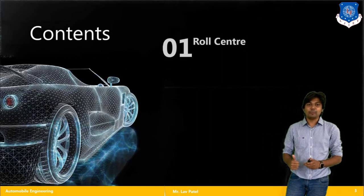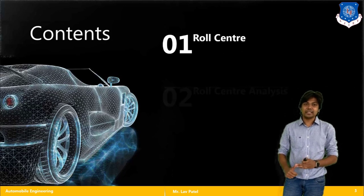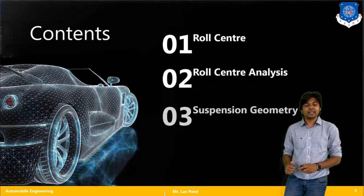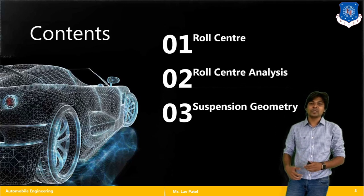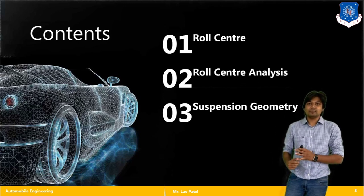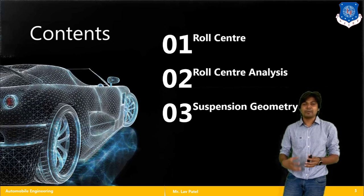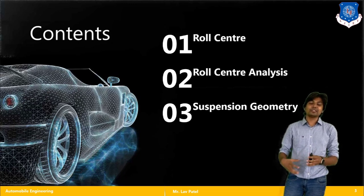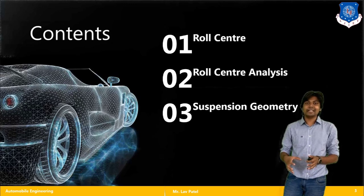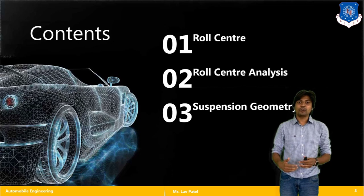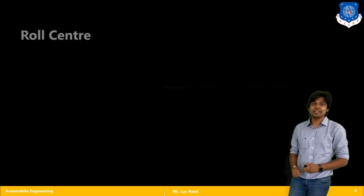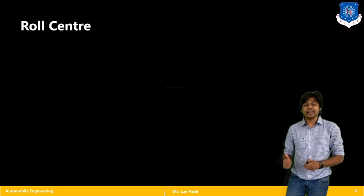In today's lecture we will talk about three main points: first is roll center, second is the roll center analysis, and third is the suspension geometry. We will discuss one by one what roll center means, how roll center affects the overall stability of the vehicle, and how to choose suspension dimensions and arrangements to comply with driver and riding performance.